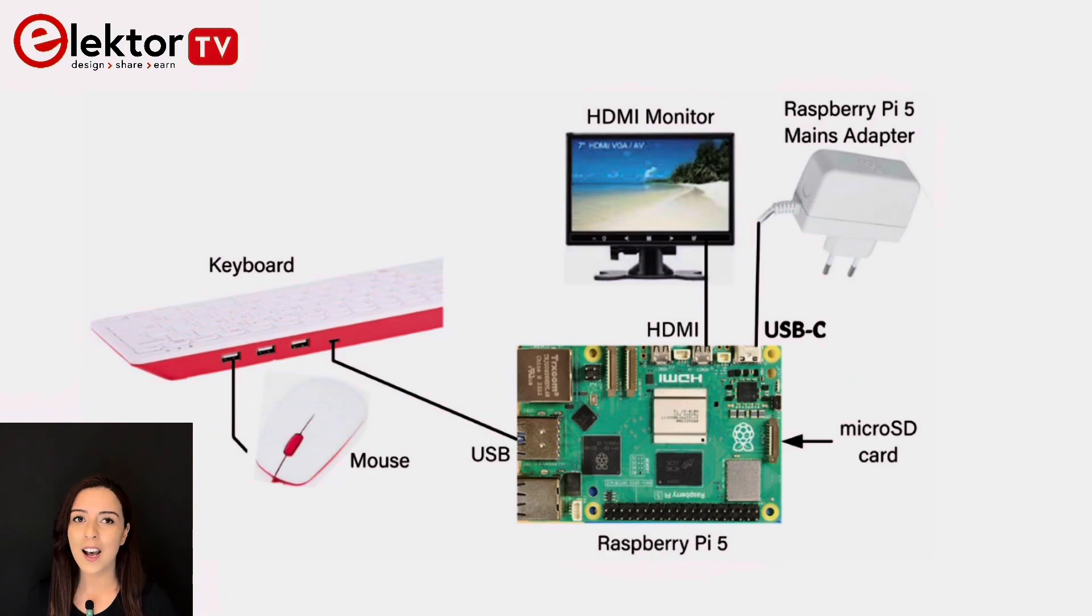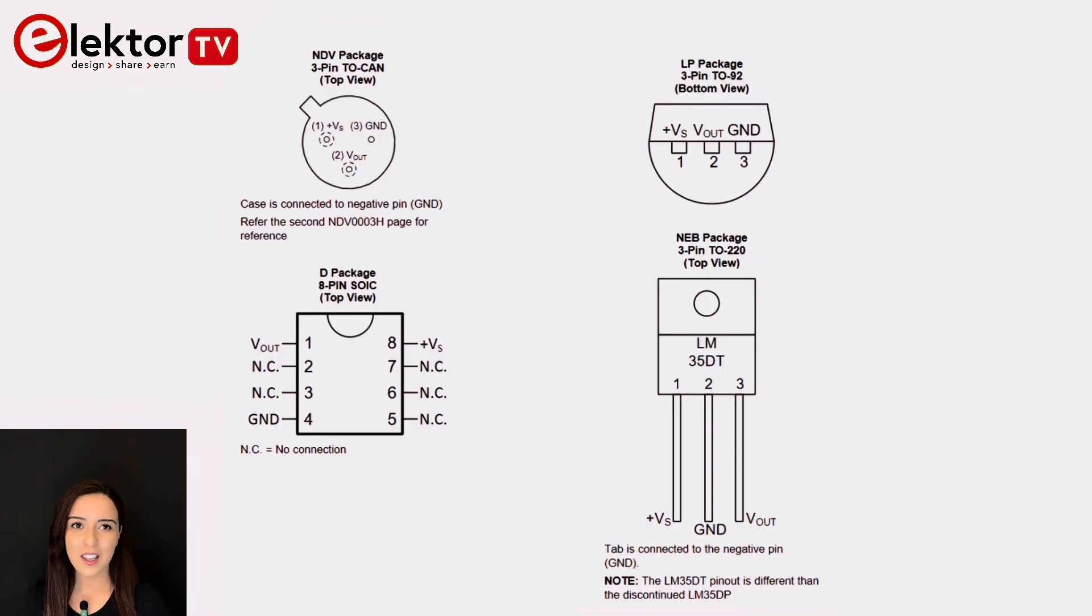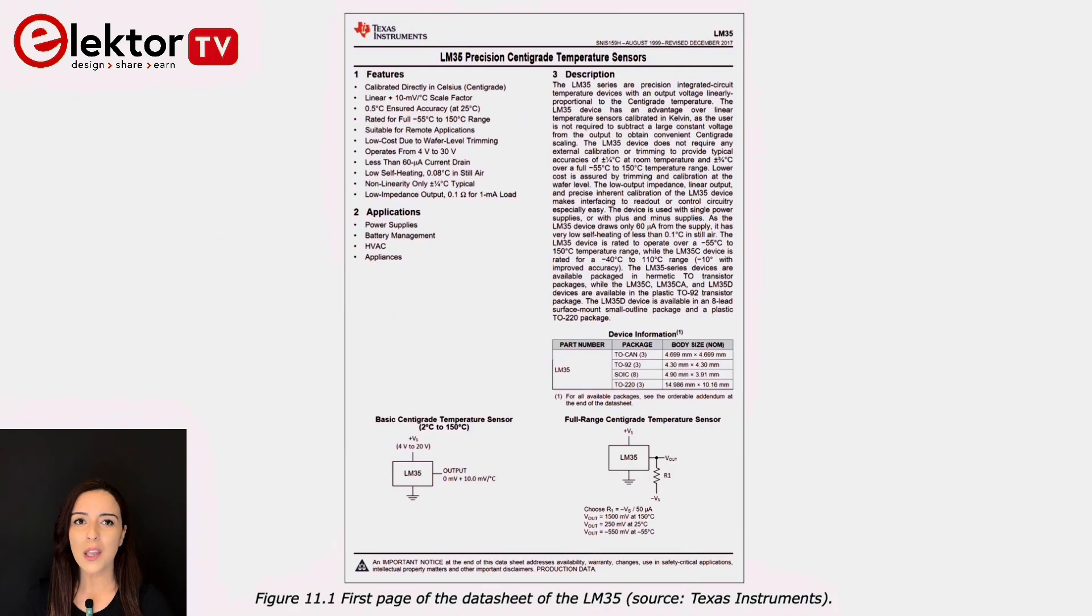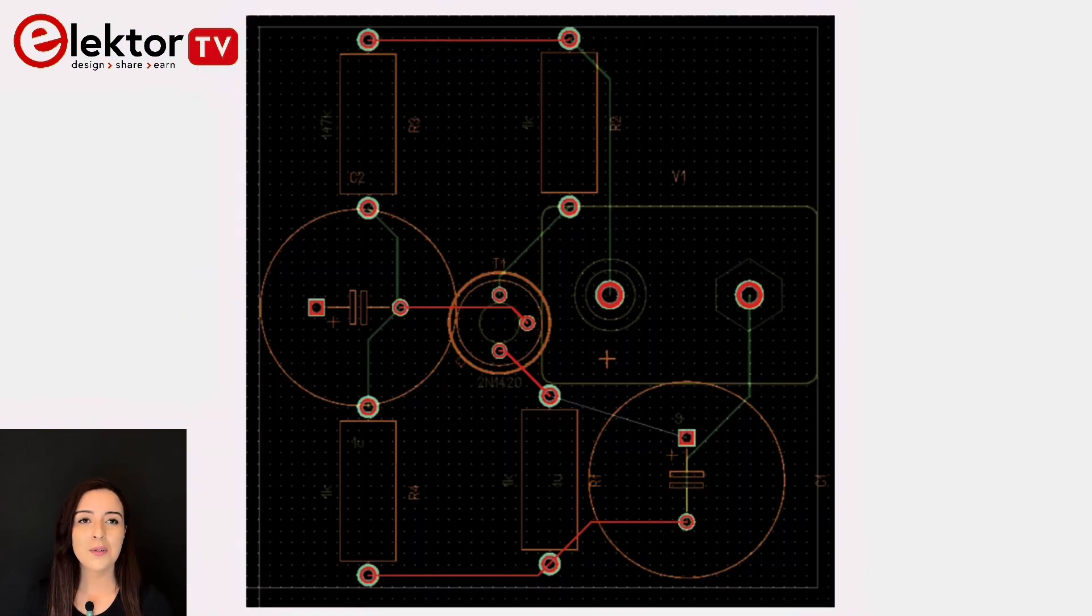Finally, chapter eleven covers additional essential topics such as component selection, reading datasheets, PCB design and EMC and EMI considerations. These skills are crucial for anyone looking to design and build robust electronic systems.